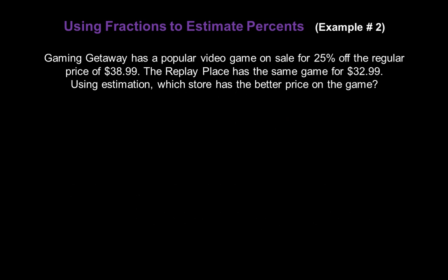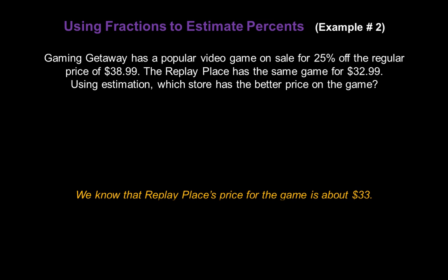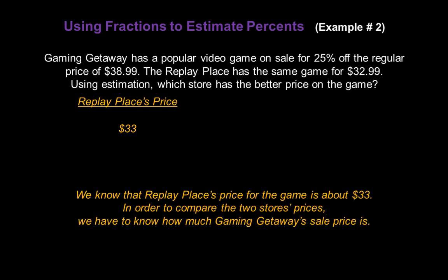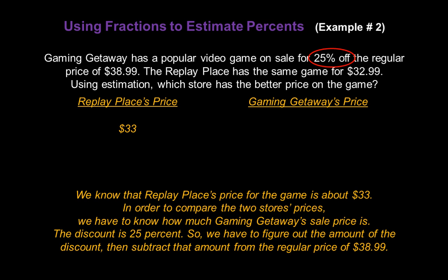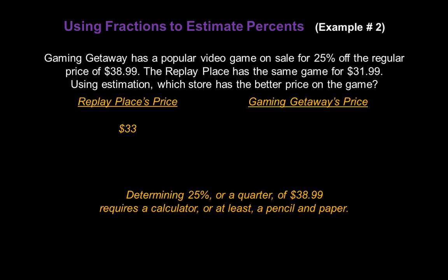Now let's work a word problem. Gaming Getaway has a popular video game on sale for 25% off the regular price of $38.99. The Replay Place has the same game for $32.99. Using estimation, which store has the better price? We know Replay Place's price is about $33. And in order to compare the two stores' prices, we have to figure out Gaming Getaway's sale price. The discount is 25%, so we need to figure out the amount of the discount, then subtract that from the regular price of $38.99. Determining 25% — or a quarter — of $38.99 would require a calculator or pencil and paper.